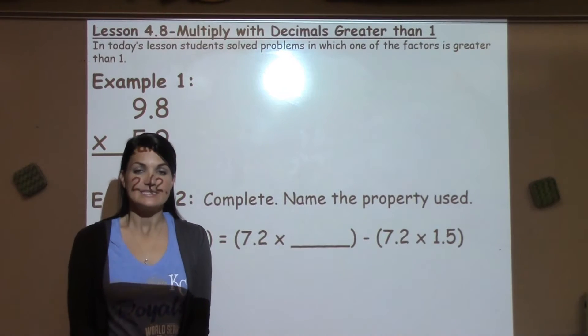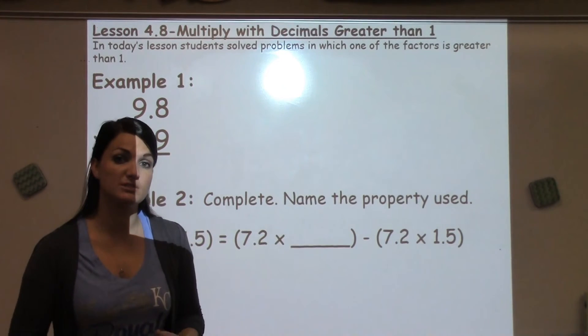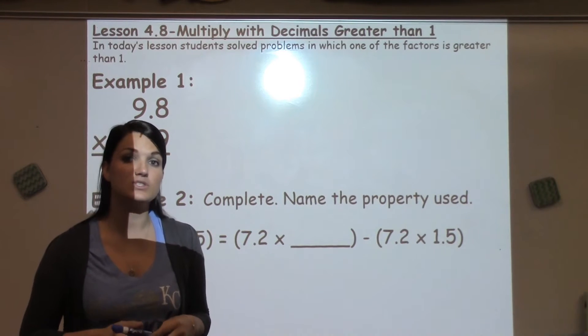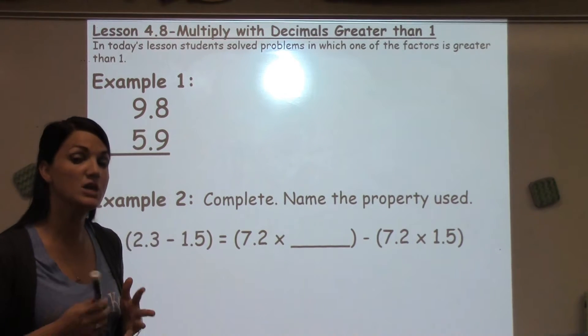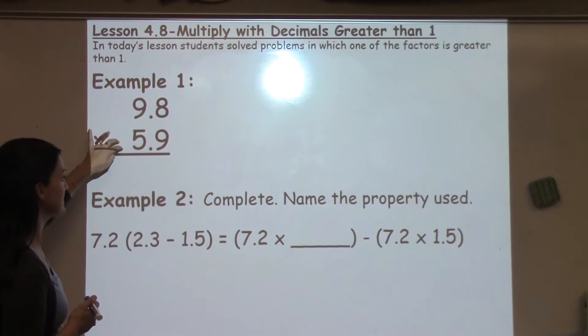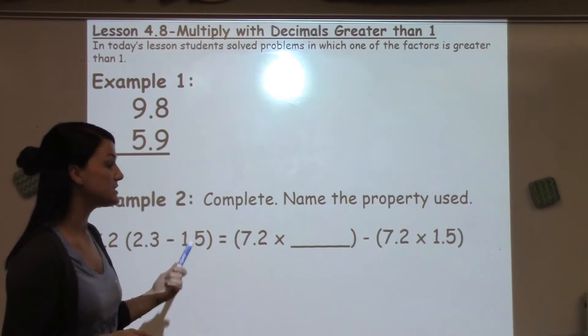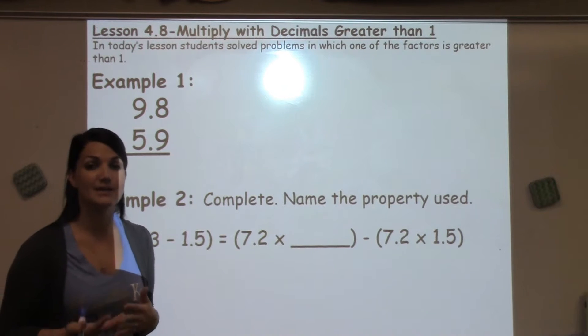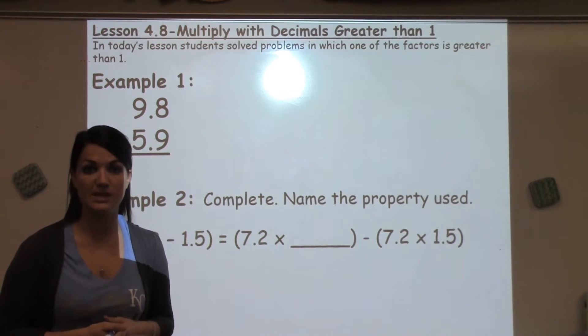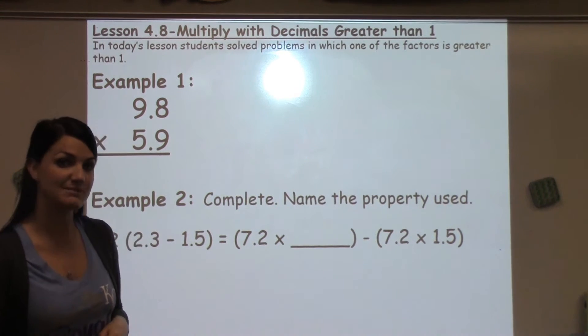Welcome to 4.8's Math Moment. Today's students learned more about multiplying with decimals, but in this lesson, students learned how to multiply with two numbers that have decimals in them. Students also learned about different multiplication properties, how to identify them, and how to use them when multiplying. Let's look at some examples.